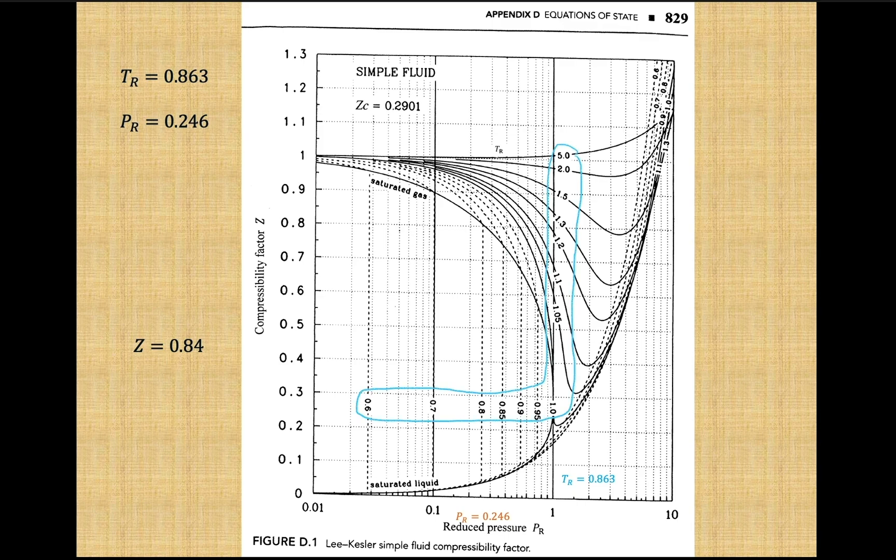We first look at the major gridlines and find where our values fall in between. Our reduced temperature is between 0.85 and 0.9.